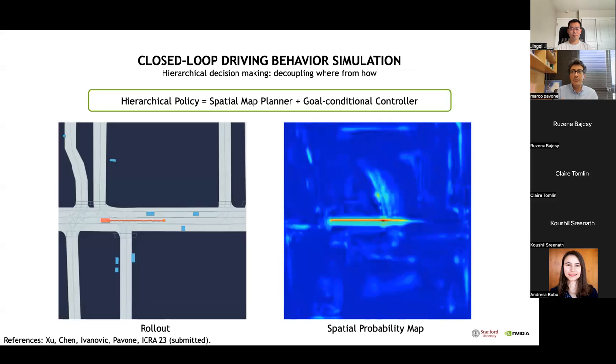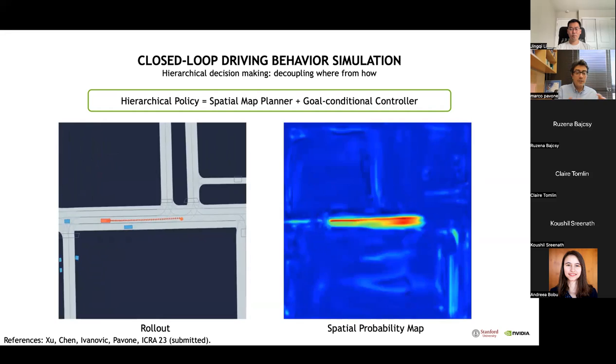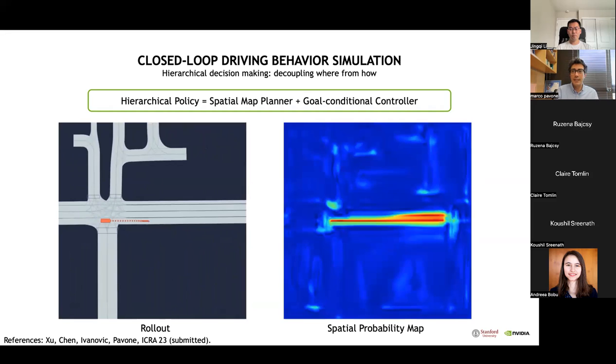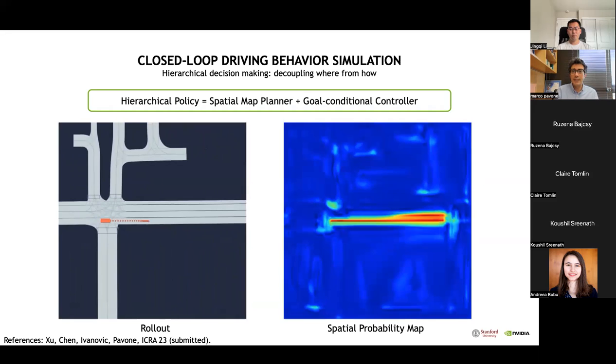We are emulating how we as humans make decisions on the road. First, we decide where we want to go, and then we make low-level control decisions to get there. In the video on the left, the high-level planner learns to set goals by sampling from a spatial probability map shown on the right. Then the goal conditional policy makes low-level control decisions to reach the target. The key insight is that such a hierarchical approach is key to achieve stable simulation over very long horizons, as it significantly simplifies the learning problem.